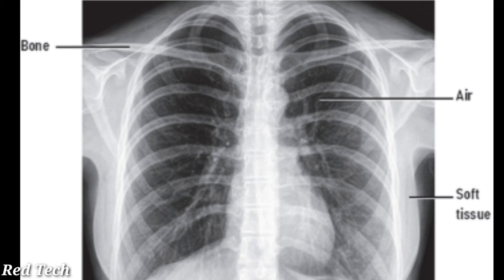Now look at another example — a chest PA x-ray. This shows bones appearing white: all the bony areas including ribs, clavicle, and sternum appear white because these are bones. The air present in the lungs appears black in the chest PA x-ray, and soft tissue appears gray.